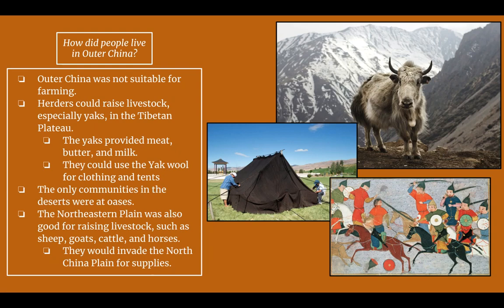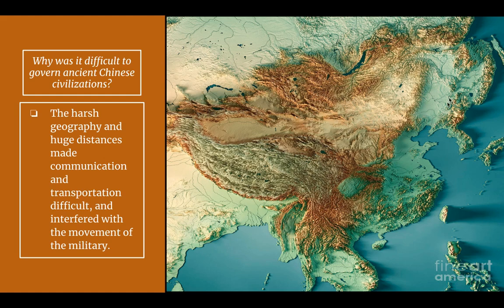Outer China was not suitable for farming, so people had to find other ways to survive. Not many people lived there, but there were herders who could raise livestock — especially yaks, a type of ox in the Tibetan plateau. From yaks they could get meat, butter, milk, and yogurt, and they could use the yak wool for clothing and to make tents. The only communities in the deserts were at the oases. The northeastern plain was also good for raising livestock like sheep, goats, cattle, and horses. The people of this region would invade the North China plain for supplies.